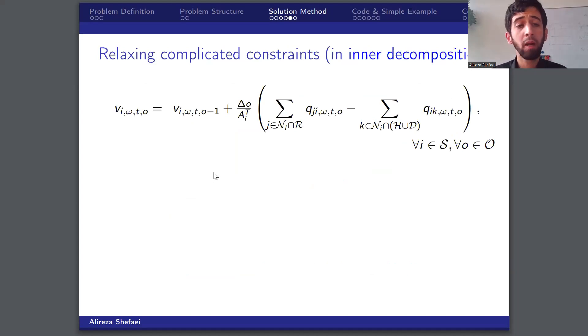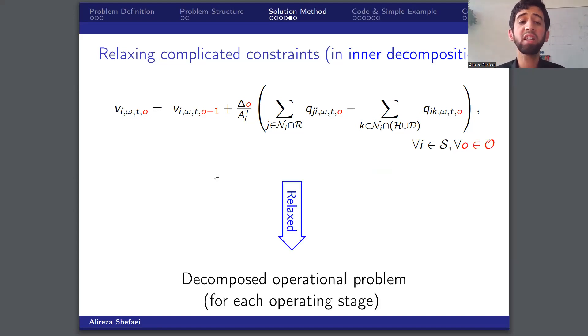However, when we come to the operating problem, there are constraints that create dependency between the time steps of the operation. These constraints in our model are related to the dynamics of the tank storage and rainwater storage resources. So by relaxing them, we can separate the operating problem to its time steps and then apply dual decomposition approaches like Dantzig-Wolfe decomposition or Lagrange relaxation to solve it.